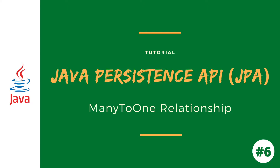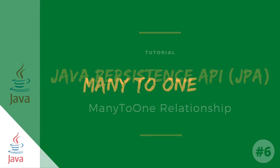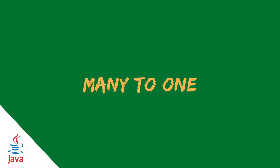Hello and welcome to the new video of JPA tutorial. In this video I'm going to talk about the many-to-one relationship. In the many-to-one relation between entities, one entity is referred with another entity which contains unique values. In a relational database, these relations are applicable by using foreign key and primary key between tables.